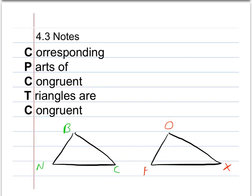So let's say we have these two triangles, triangle NBC and triangle FOX. If we know that these two triangles are congruent, then all the parts are congruent as well. So for example, side length NB is congruent to side length FO. BC is congruent to OX. NC is congruent to FX. So all the sides are congruent.